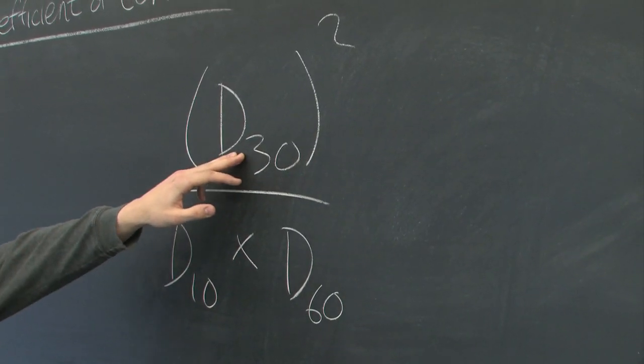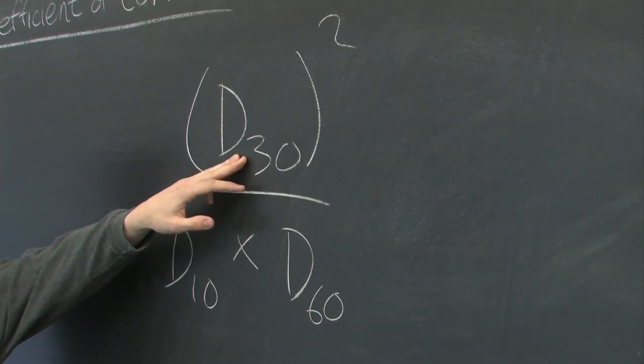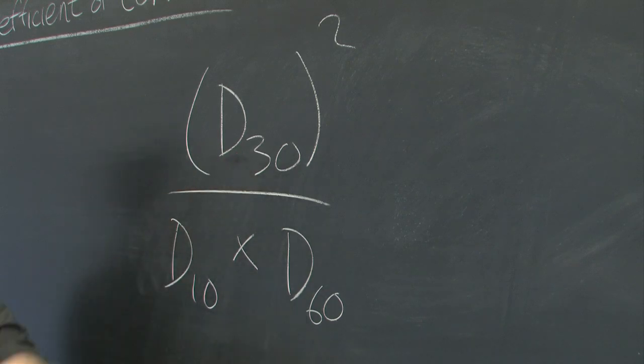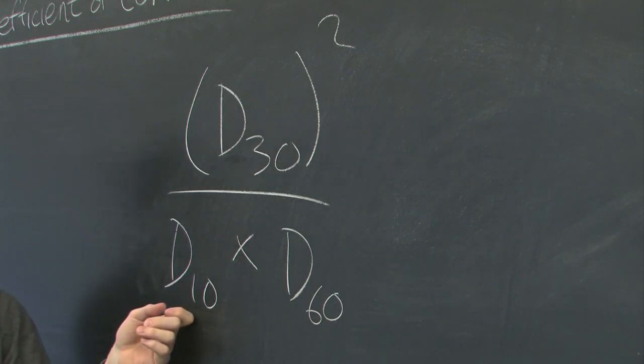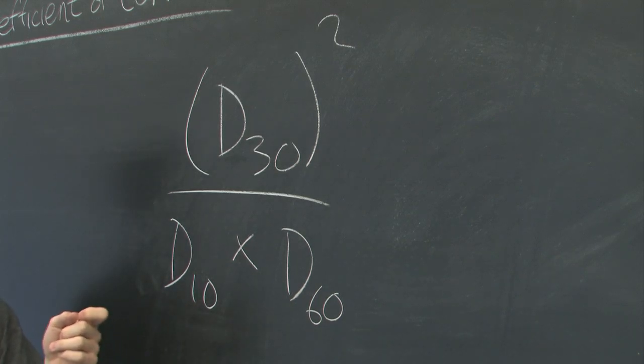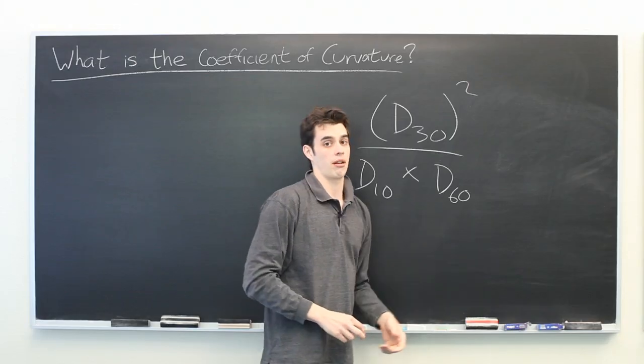D sub 30 indicates the diameter of the sieve at which 30% of the sample will pass through. Similarly, for these two numbers, D10 is the sieve diameter for which 10% of the sample will go through and here 60% of the sample will go through.